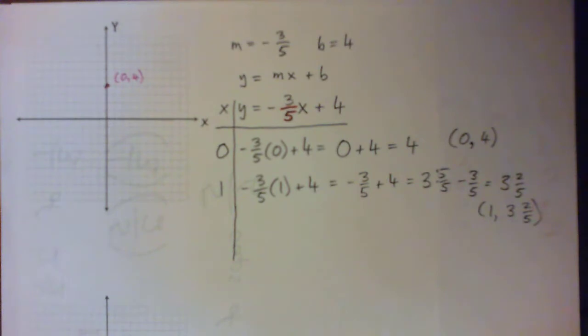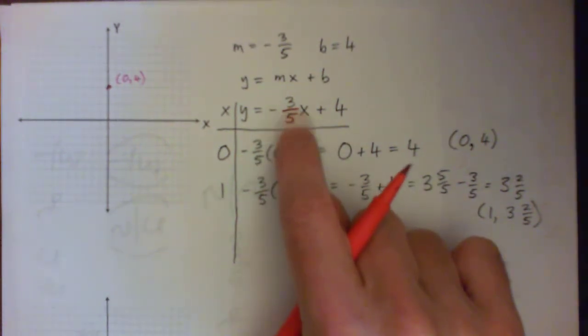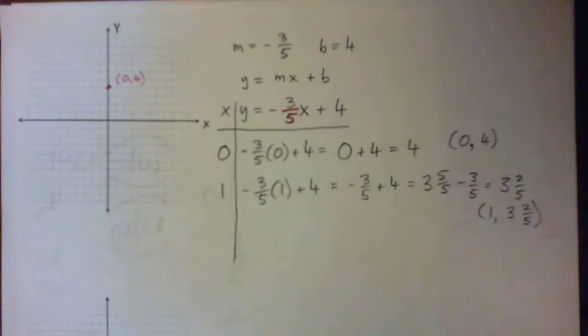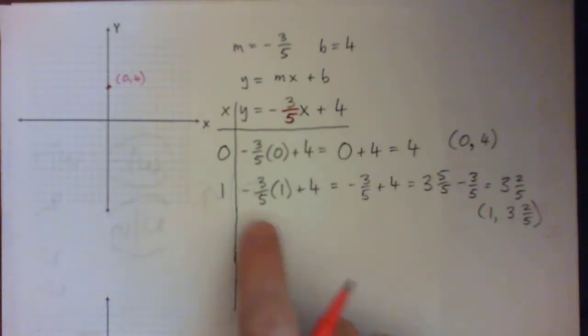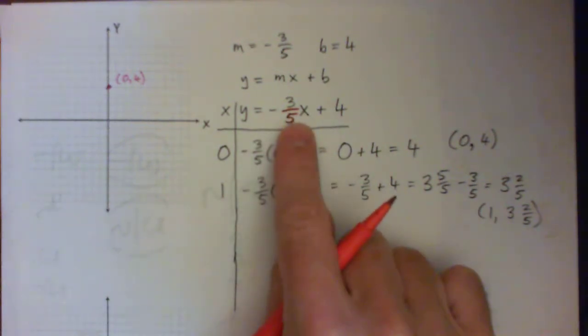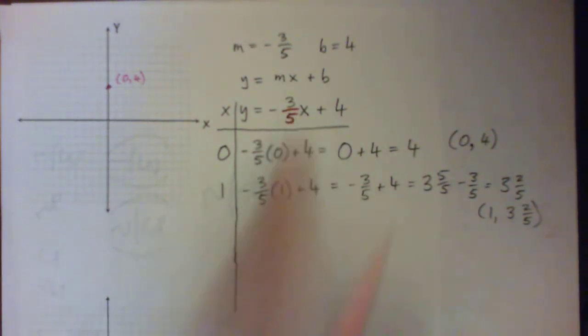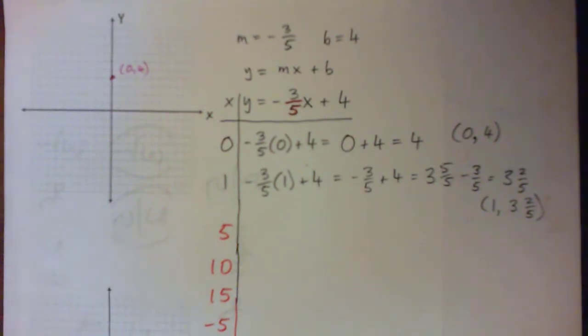We've got 5 on the bottom, so we should multiply by multiples of 5. For example: 5, 10, 15, 20, 25, or maybe negative 5. Let's plug in 5: -3/5 times 5 plus 4.